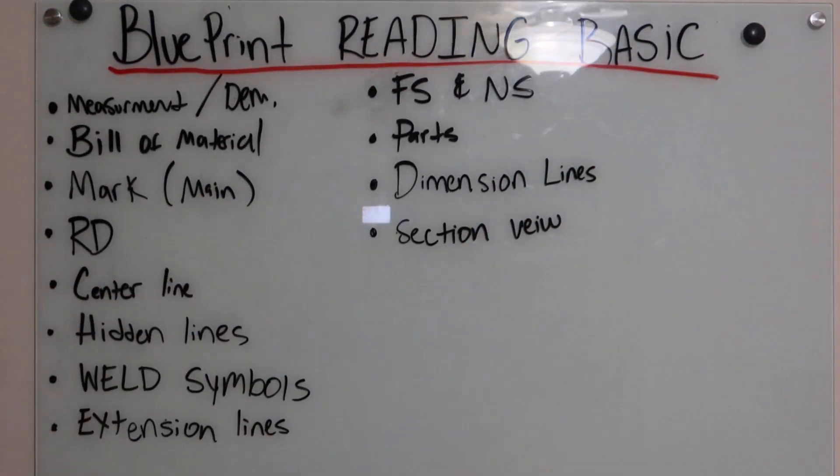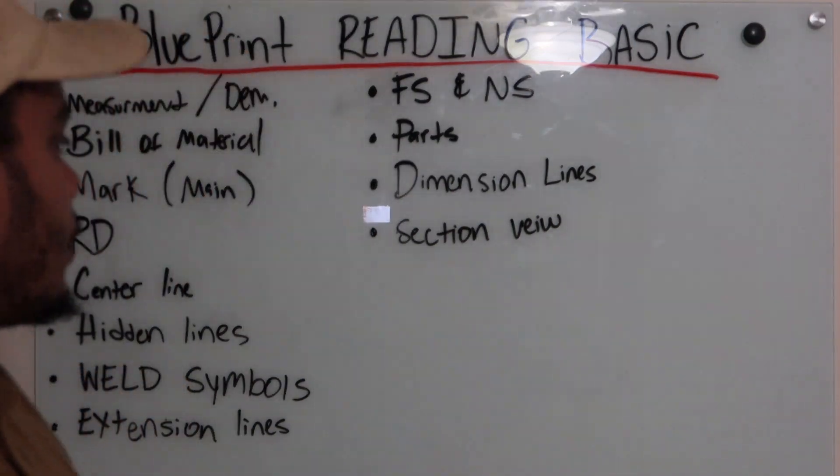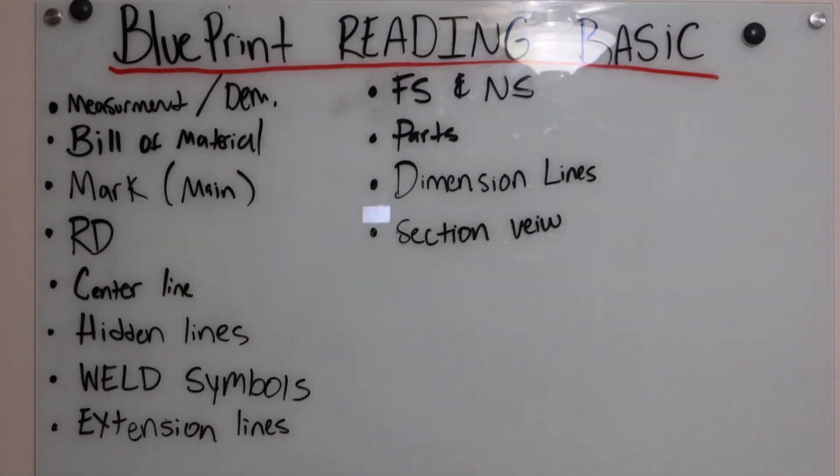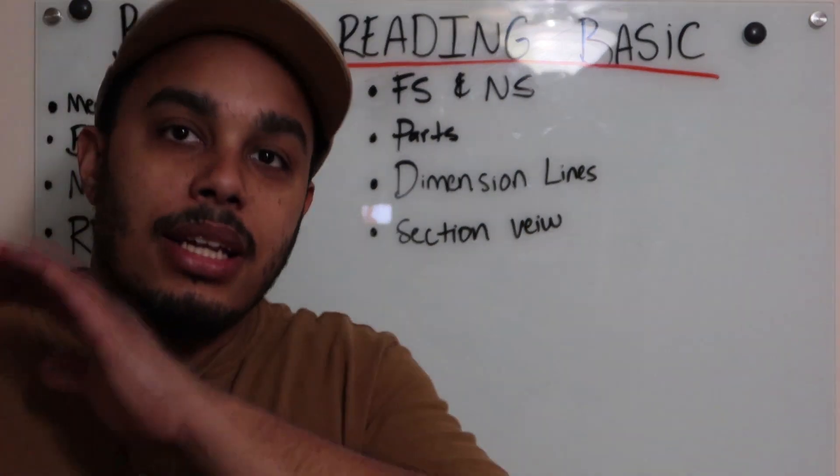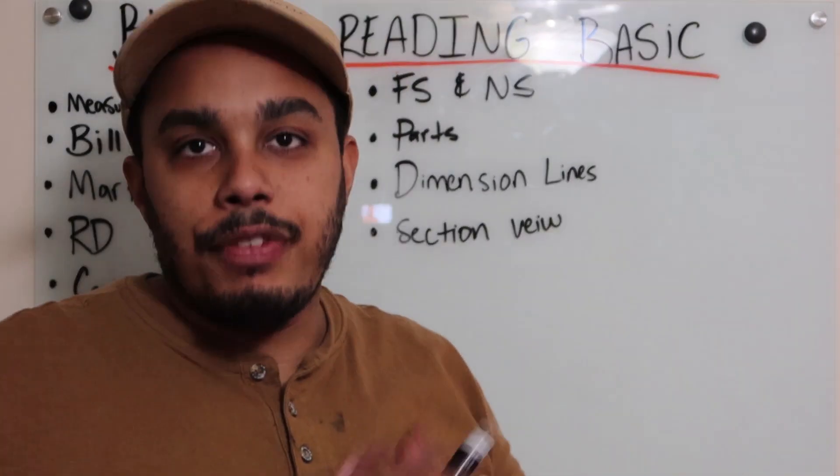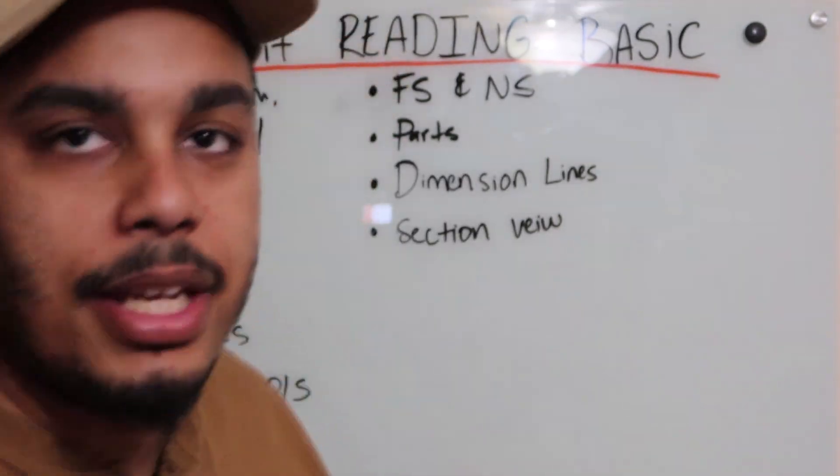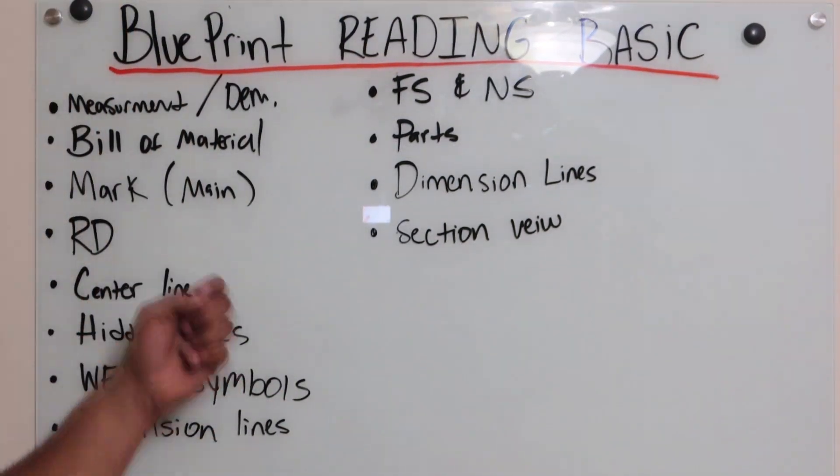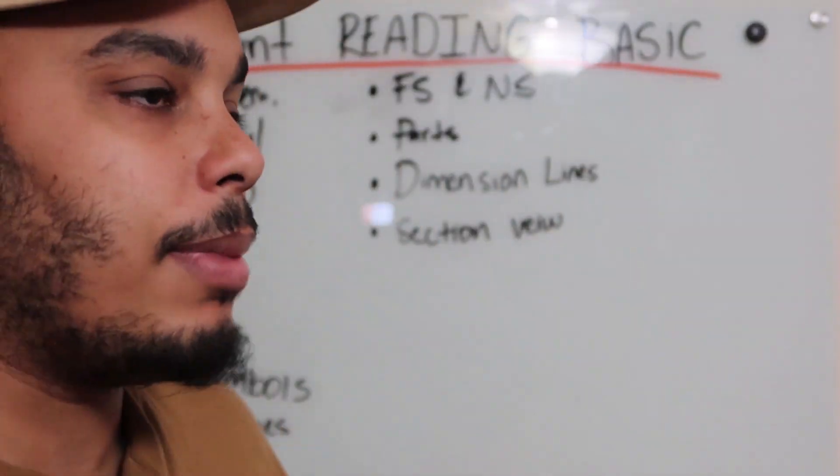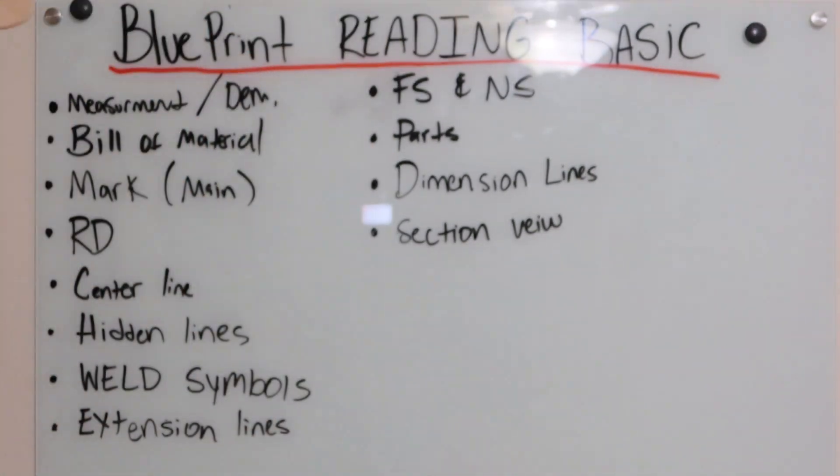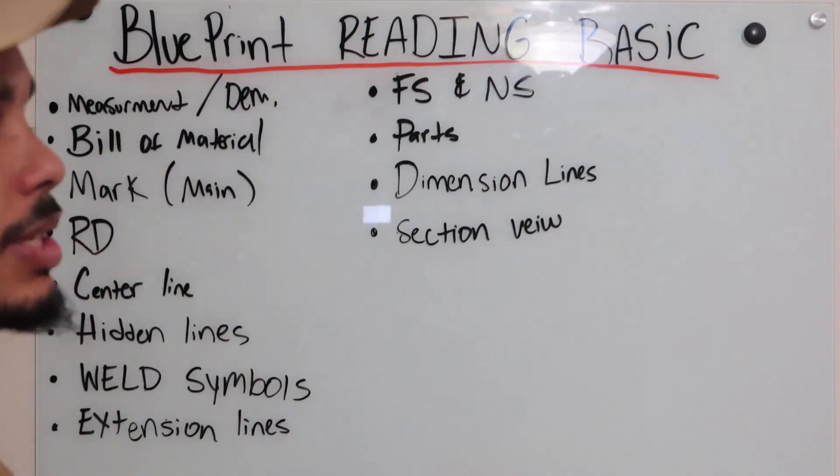Blueprint reading basics. Some of this pertains to blueprints in general, some pertains to just welding and fabricating. Number one: measurements and dimensions. You see measurements and dimensions on any print that you look at. Bill of material is on there if you're putting something together. Each print has a main mark of what the main piece is, a directional mark southwest northeast where it's gonna go. Running dimensions, RD running dimensions.